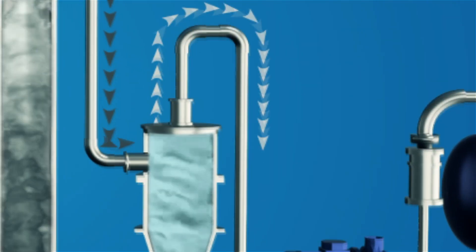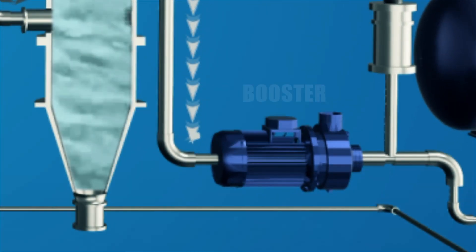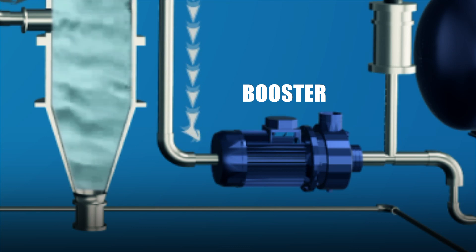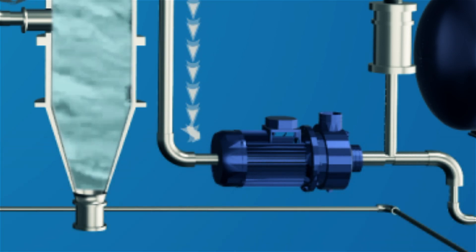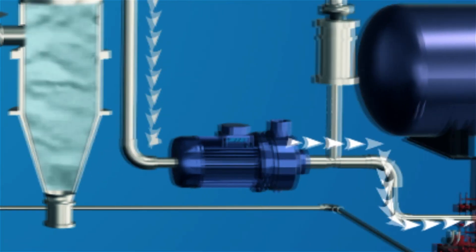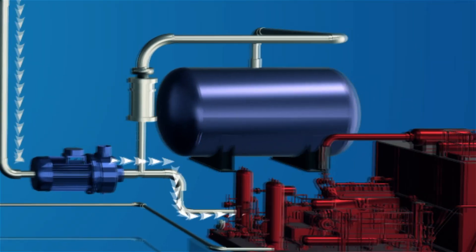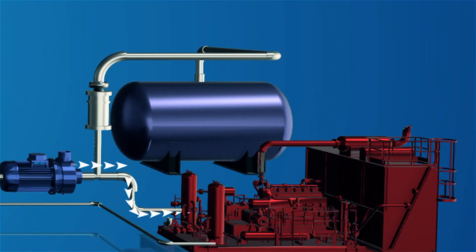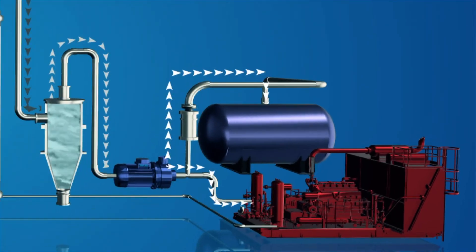The cleaned and cooled combustible gas is passed through a booster for generating requisite pressure in the supply system. Now, the syngas is ready for supply to gas generators for power production. The syngas can also be used directly for various thermal applications in industrial units.